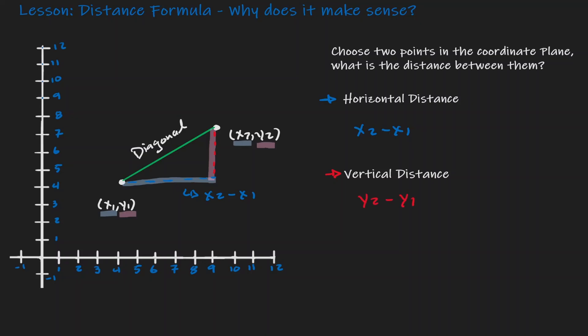Now notice that if we connect all those three distances, the green, the blue, and the red, we actually form a right triangle. And if this is a right triangle, then we can use the Pythagorean theorem.